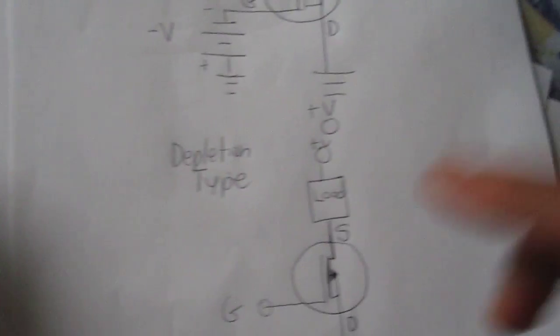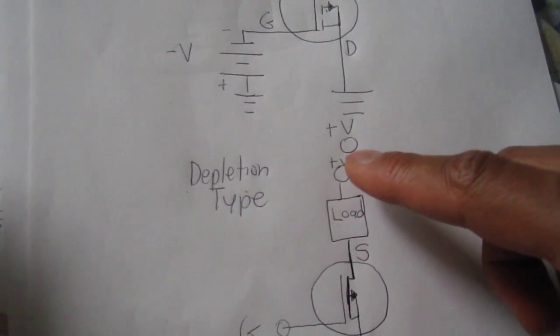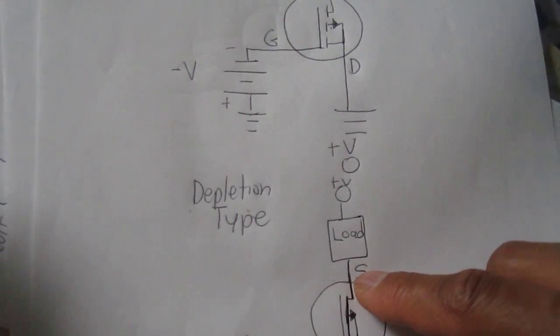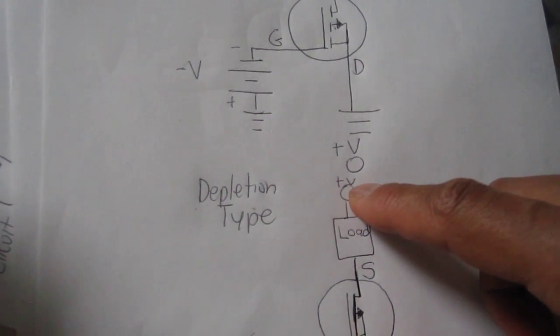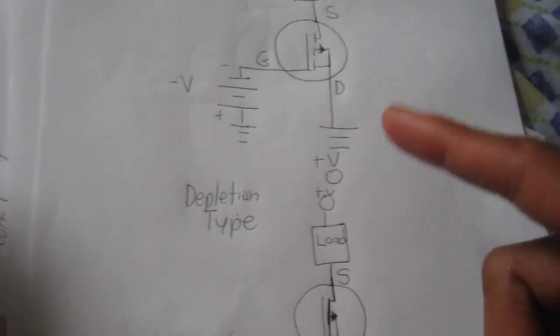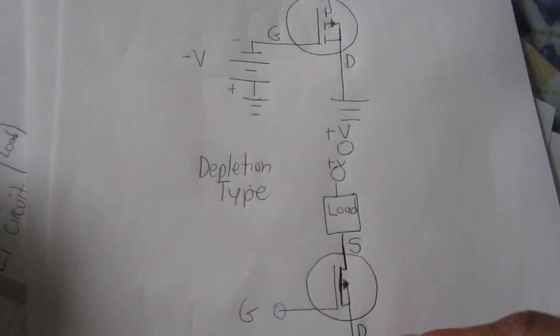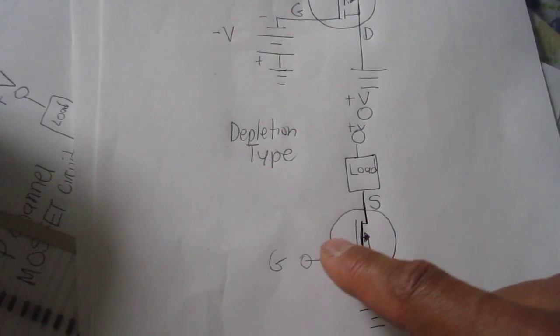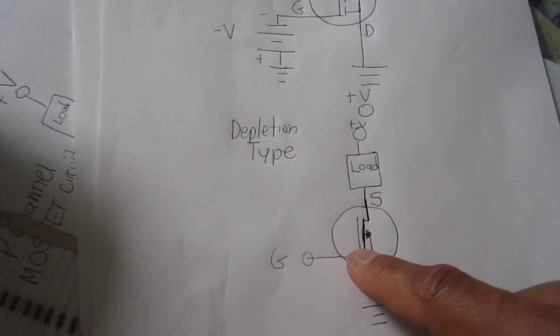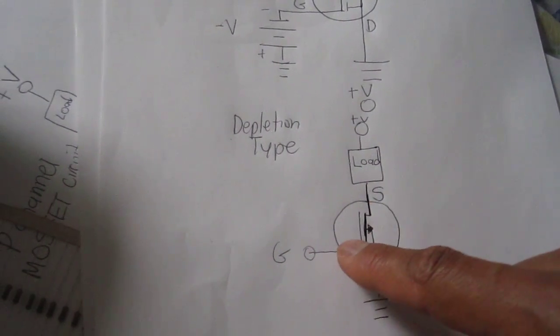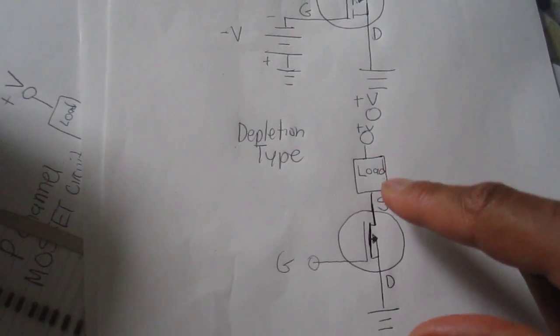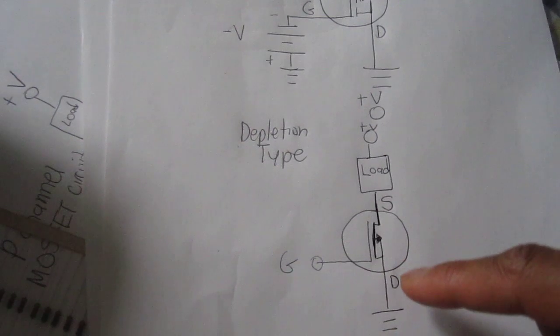Now for depletion type, all it needs is the source terminal connected to the load and positive voltage supply, drain as with enhancement type connects to ground. To have it fully conductive, we apply no voltage at all to the gate terminal.